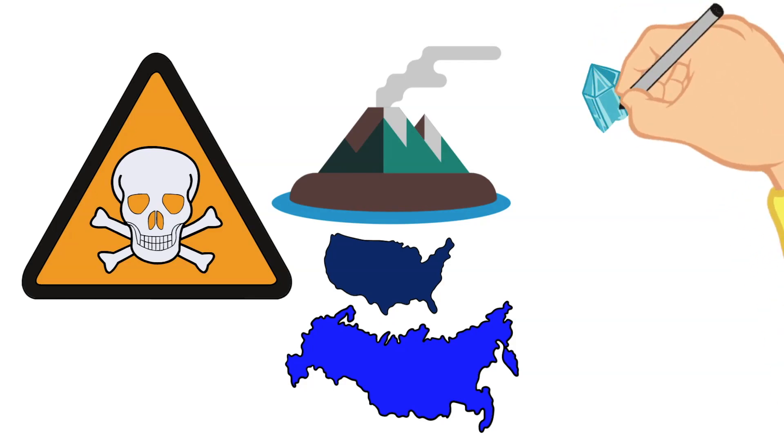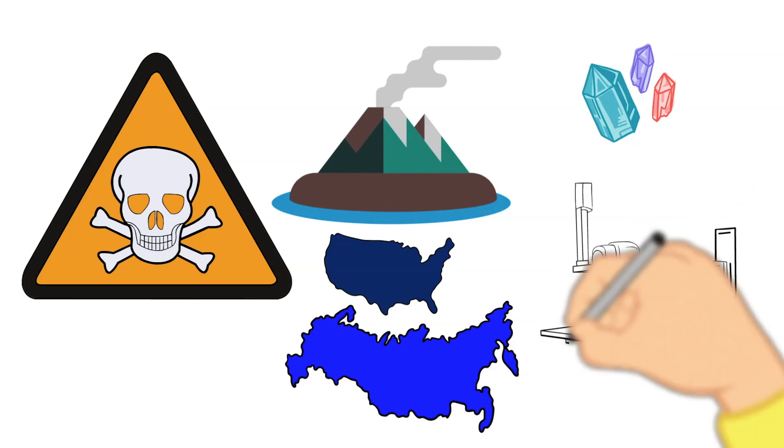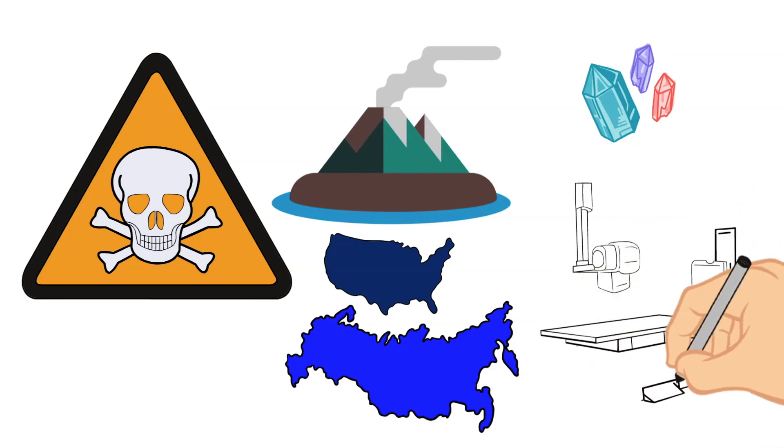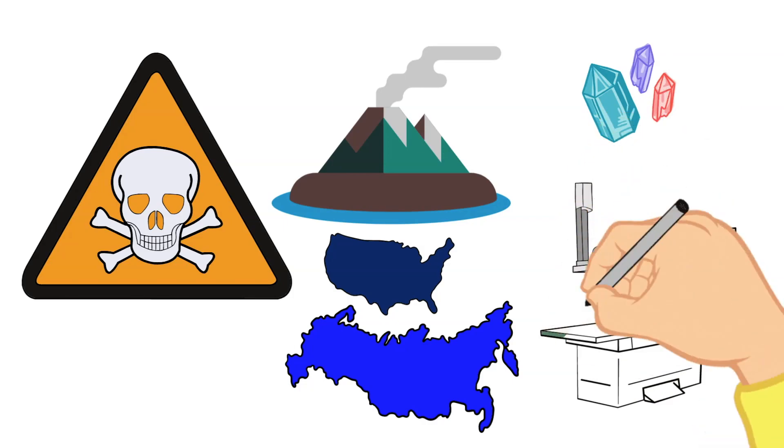We can use beryllium in a number of different ways. Many of its uses are pretty high tech or in the military but one application is in windows for x-ray machines. Beryllium is transparent to x-rays which makes it a good substance to use for these windows.